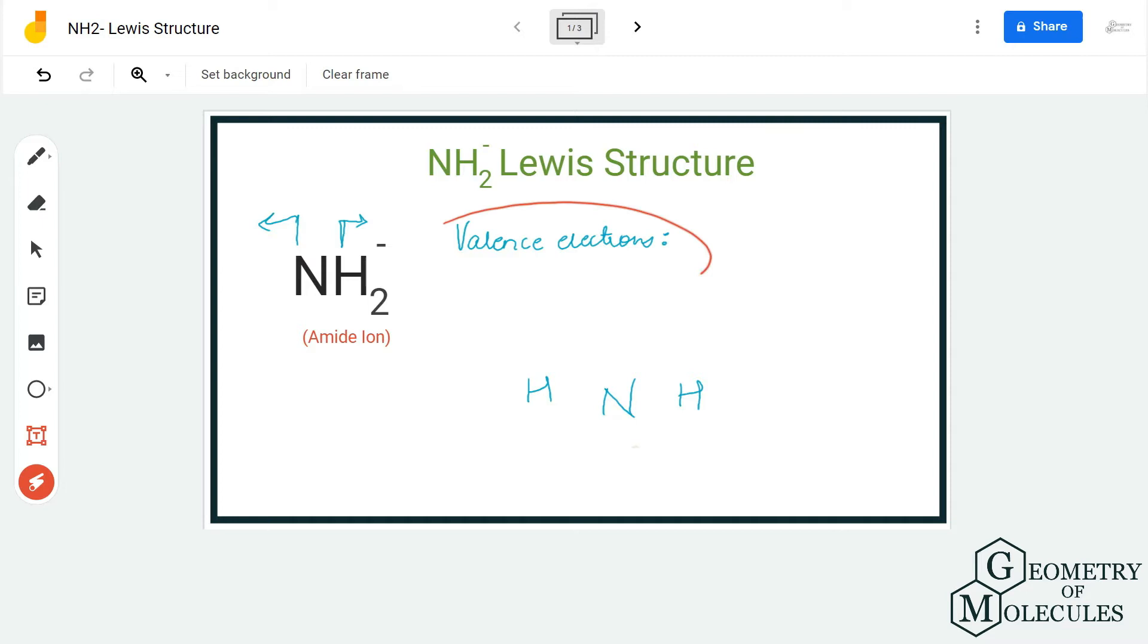are first going to see the number of valence electrons for this molecule. Nitrogen has five valence electrons in its outer shell, each hydrogen atom has one valence electron, and there is a minus charge meaning it accepts an additional electron. In total, we have eight valence electrons for NH2- ion.